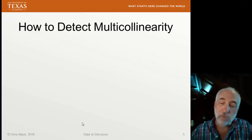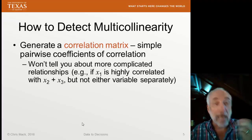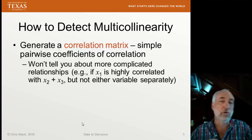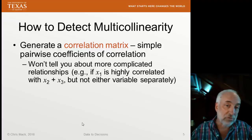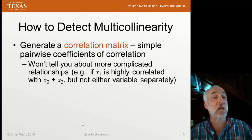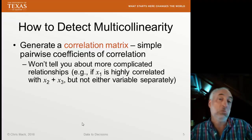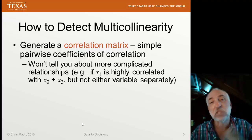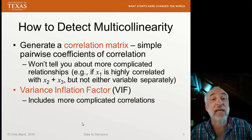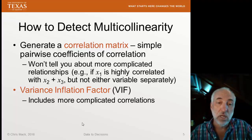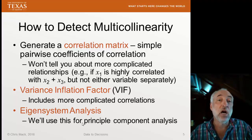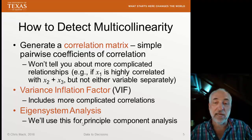Let's talk about how to detect multicollinearity. Our first method is the correlation matrix — we look at how every variable correlates with every other variable, but these are all pairwise coefficients of correlation: X1 versus X2, X1 versus X3, X2 versus X3, etc. But there can be more complicated relationships — X1 could be highly correlated with the sum of X2 and X3, for example, but not either variable separately. Therefore, the correlation matrix is somewhat limited. I'll next discuss the variance inflation factor, which allows us to detect more complicated correlations, not just pairwise. And finally, we'll also mention eigensystem analysis, which will prove important when we move to principal component analysis, or PCA, in a future lecture.